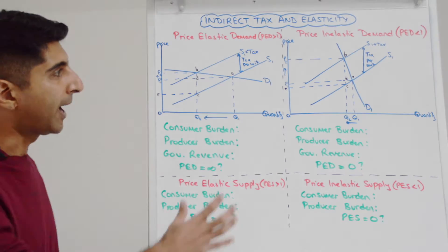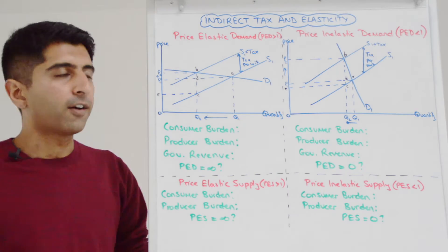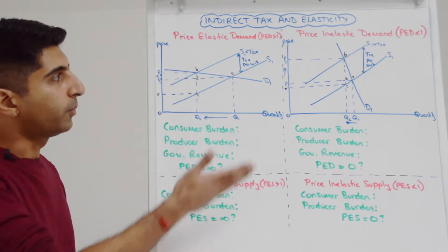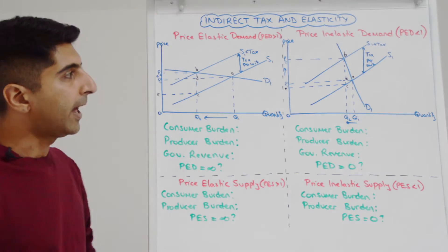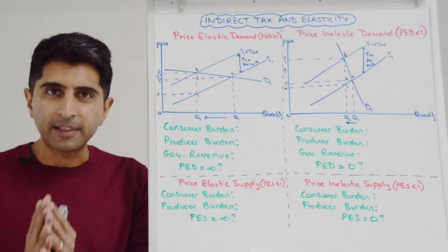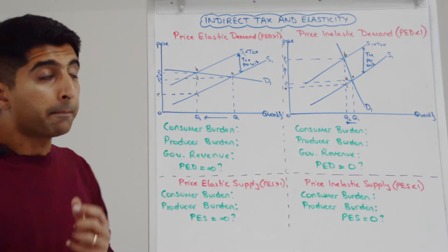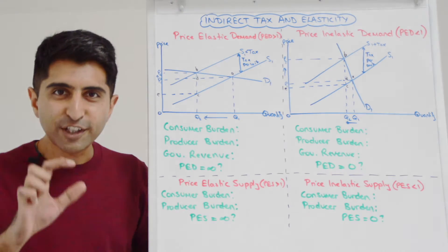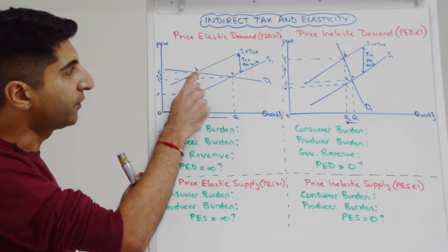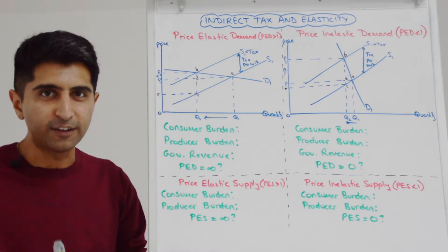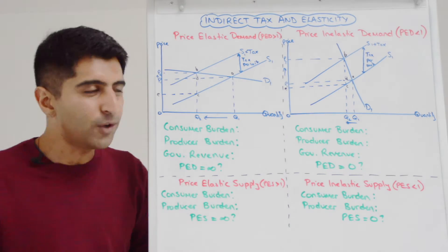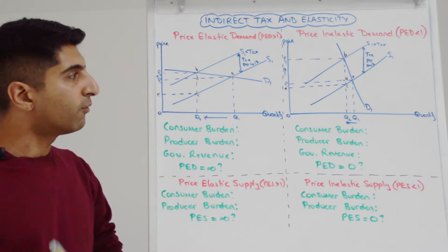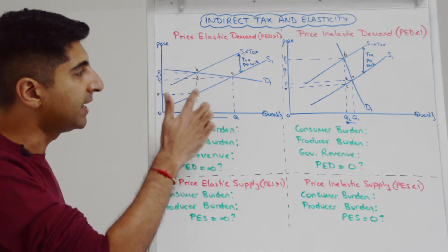Let's start with price elastic demand. I've drawn a diagram of an indirect tax with a demand curve that's quite shallow, and we can see the supply shift. Let's apply the same concepts from my previous video: go to the new equilibrium, work out the vertical distance between the two supply curves. The new equilibrium is at B, the vertical distance BC is the tax per unit, multiplied by all units up to Q2, giving us government revenue of the box P2BCE.